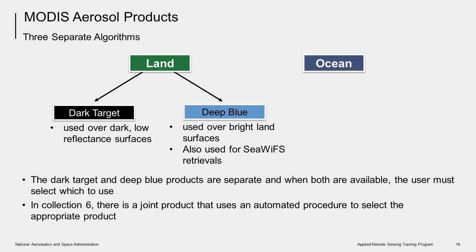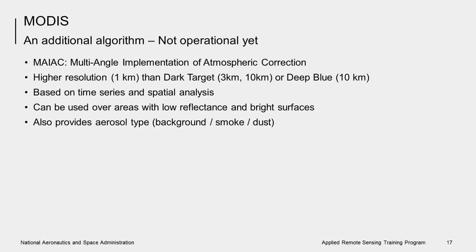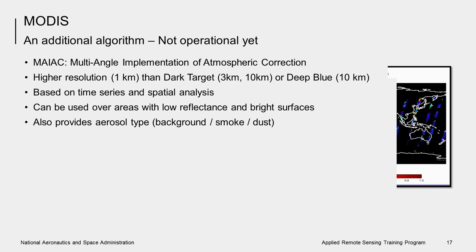The Dark Target and Deep Blue products are separate, and where both are available, the user must decide which one to use. However, in the latest MODIS version, Collection 6, there is a joint merged product that uses an automated procedure to choose the most appropriate product. There is also an additional, not yet operational, retrieval algorithm for MODIS: the Multi-Angle Implementation of Atmospheric Correction, or MAIAC algorithm. MAIAC performs aerosol retrievals over both dark vegetated surfaces and bright deserts, based on time series analysis and image-based processing. It also provides an estimate of aerosol type — for example, distinguishing background versus smoke versus dust.